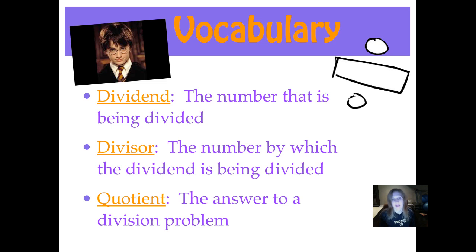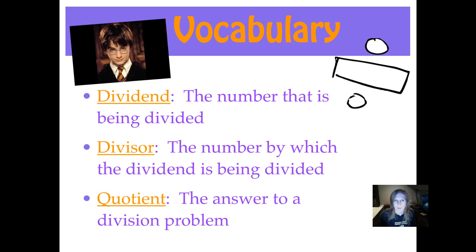Here's our vocabulary. You'll just need to know this so that when we're referring to different parts of the problem, you'll know what we're talking about. So write it down. The dividend is the number that is being divided. The divisor is the number by which the dividend is being divided. The quotient is the answer to a division problem.